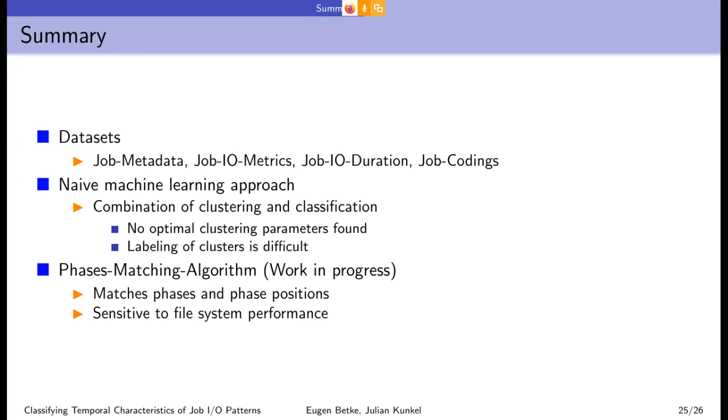So we created datasets that can be downloaded from the GitHub repo. Machine learning didn't work as expected. We didn't find optimal clustering parameters, maybe different features. I think we need some algorithm that is tailored to our data. This works much better than general purpose machine learning algorithms. Thank you for your attention.